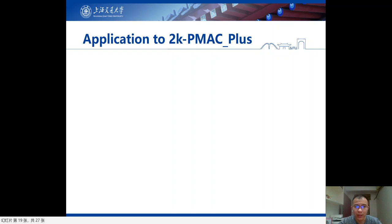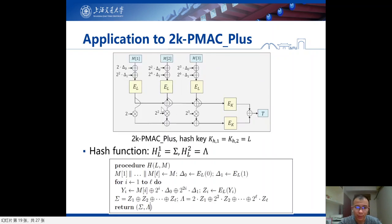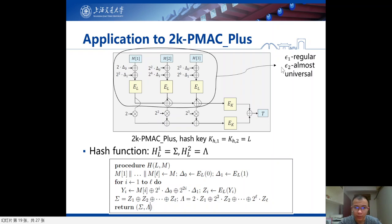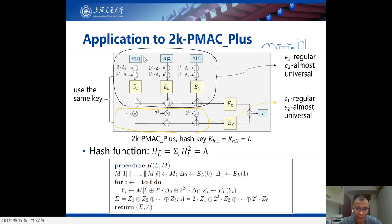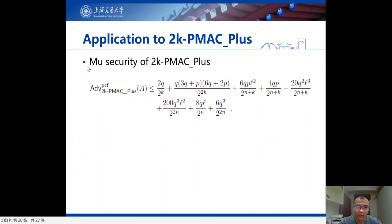We also show the application to 2K-PMAC+. The hash function of 2K-PMAC+ is similar and parallelizable. We prove that the first path of the hash function satisfies ε₁-regular and ε₂-almost universal, and similarly the second path. And similarly, the first and second paths use the same key, so we also need to analyze the relationship between each path. After that, we apply our main theorem with the field multiplication and show this construction is beyond-birthday bound in the multi-user setting.